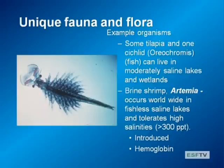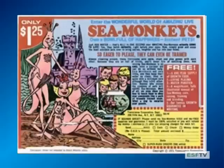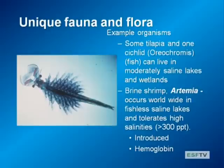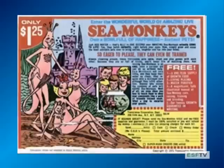Some of you may be familiar with Artemia or brine shrimp from aquaculture, where it's often used as food for small fish. Others may have grown them as sea monkeys. Those sea monkeys were the resting eggs or resting stages of these pelagic, open-water swimming zooplankton—the brine shrimp—that live in salt lakes.